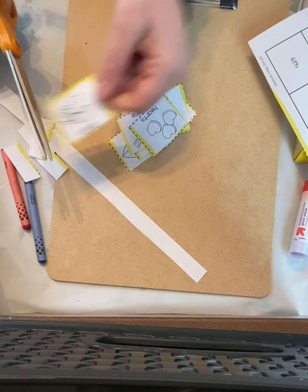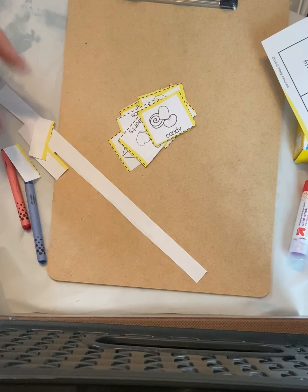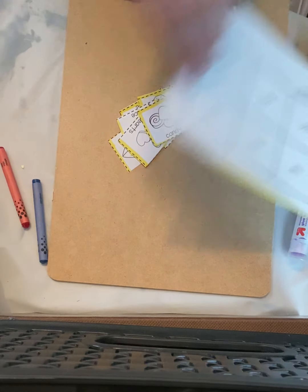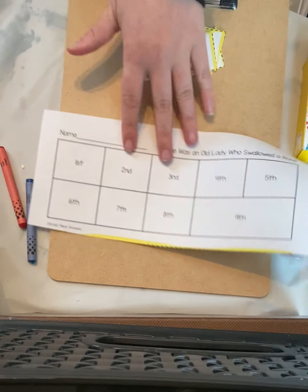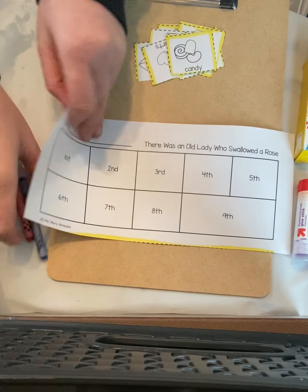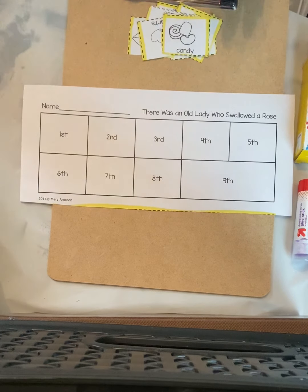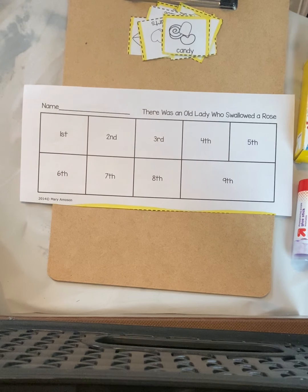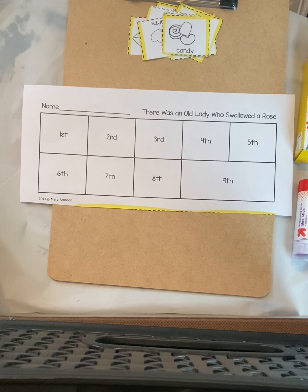So here we go. Now that we have all of our pieces, you can put the scissors to the side and we can put them in order. So here we go. Let's see if we can remember from our story. So let's see the first thing. What was the first thing that the old lady swallowed? She swallowed a rose. That's right.